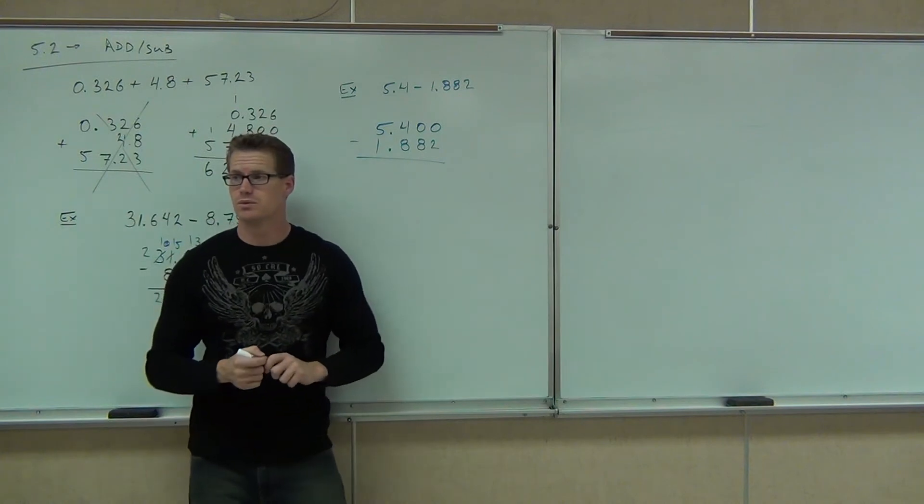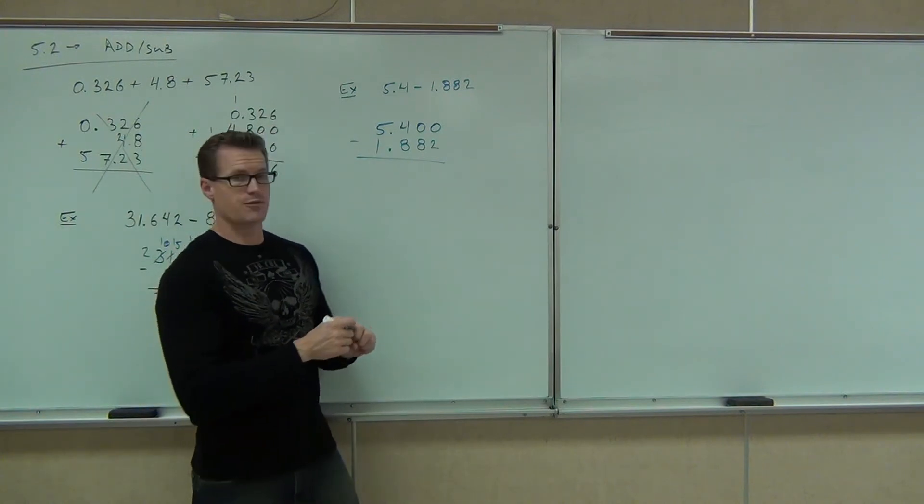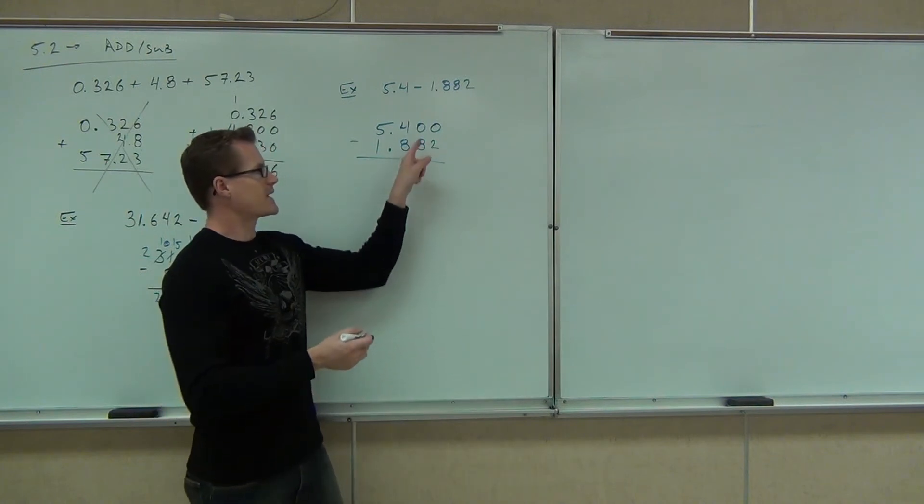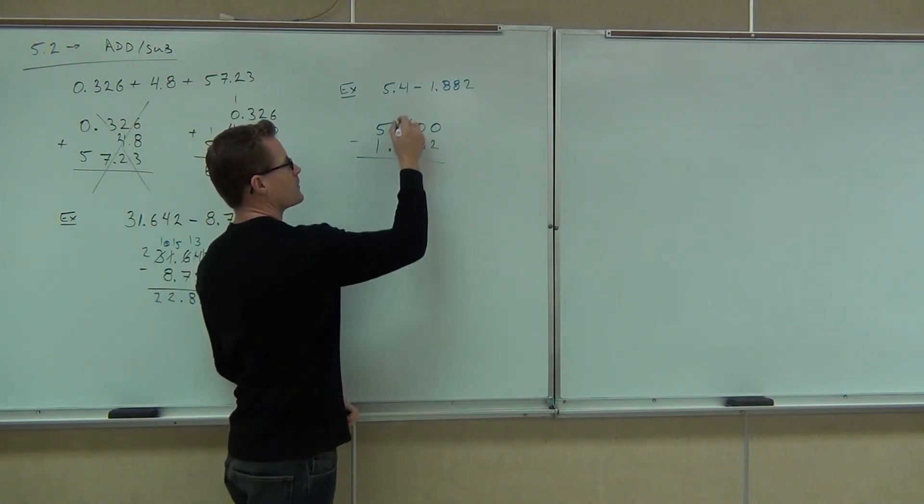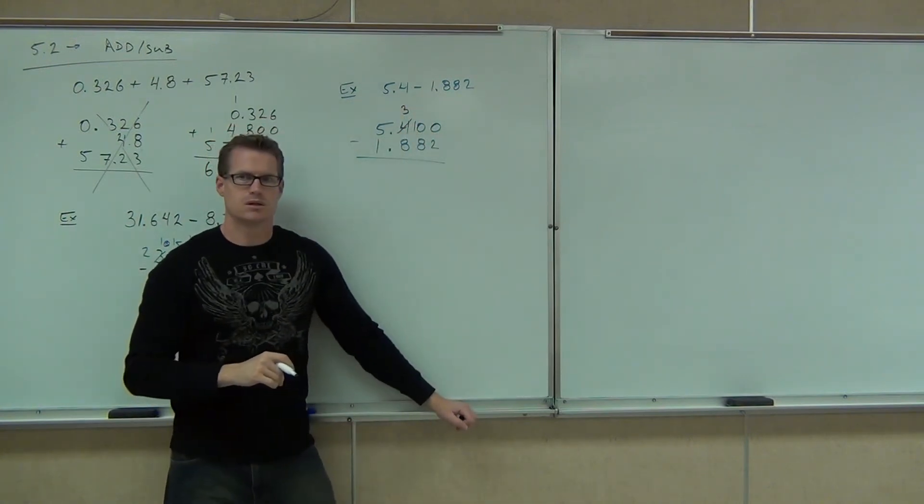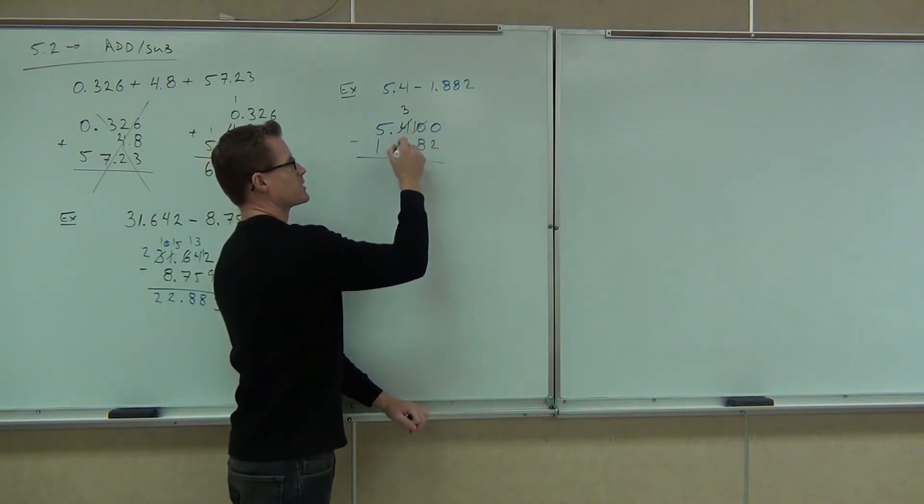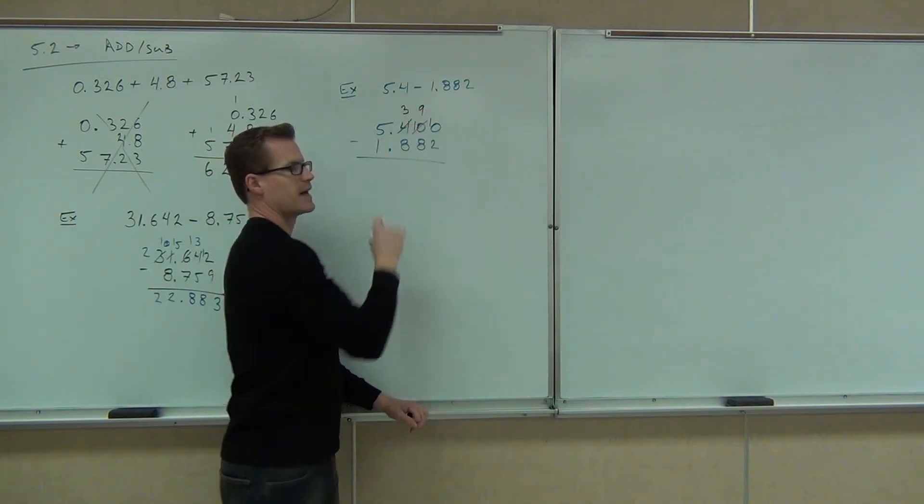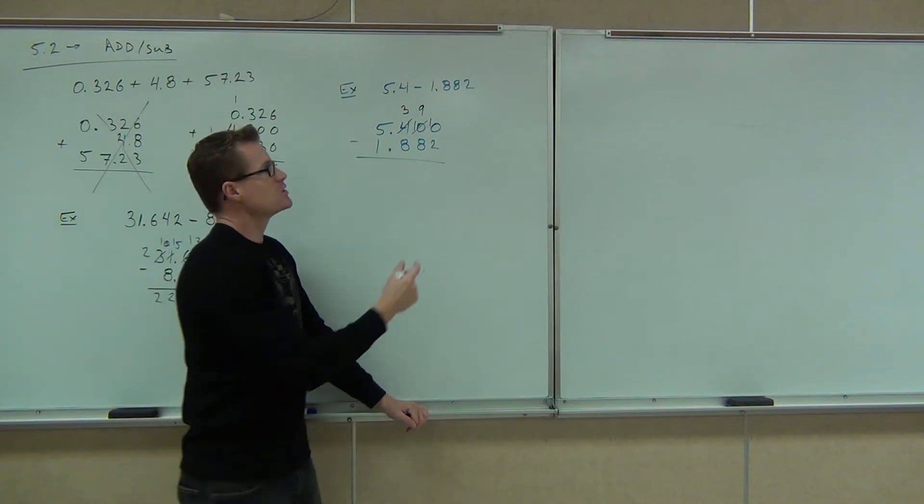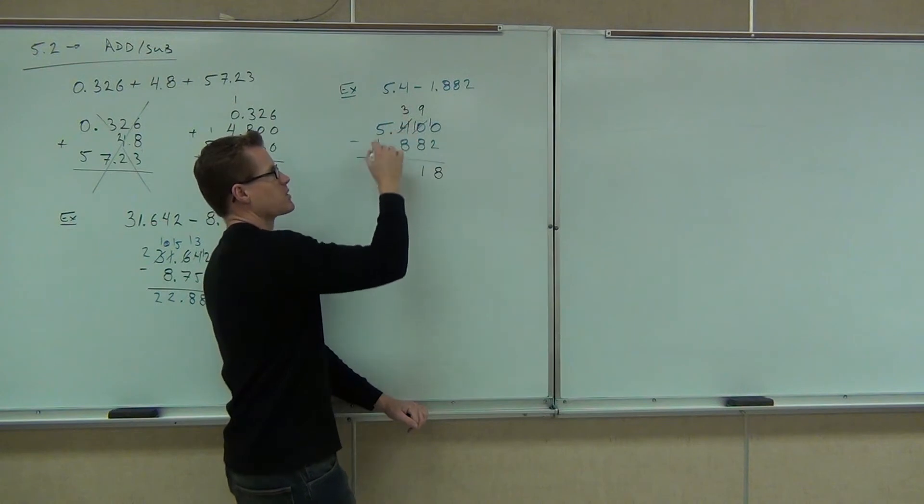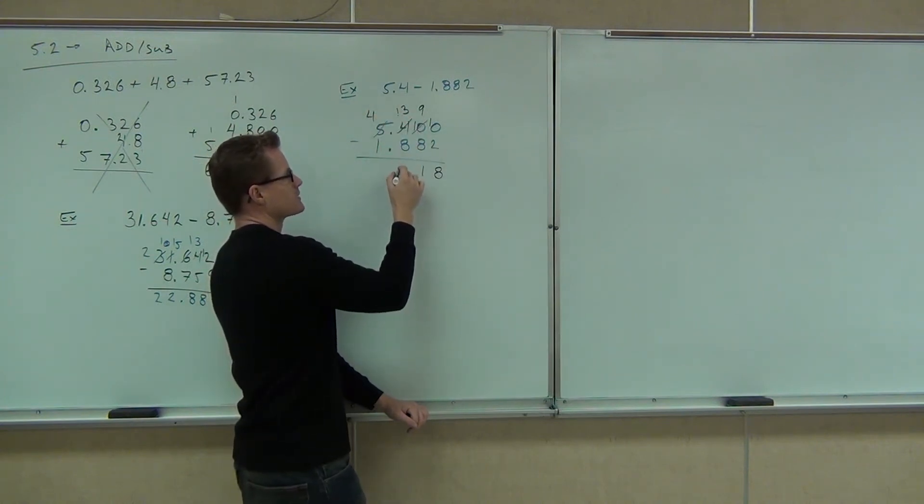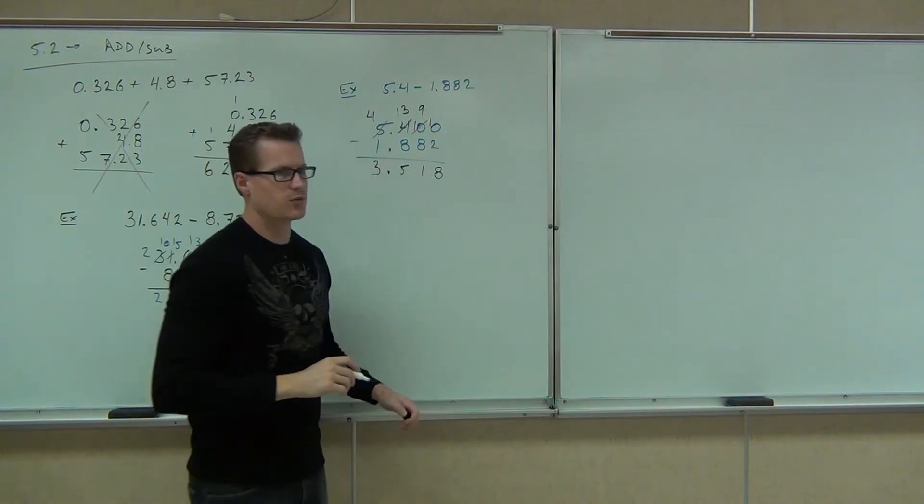What can you do? Borrow from the 4. From the 4, or from the 5, either one. I can't borrow from this, so I have to go one more place over. If I borrow from the 4, I make it a 3. That makes this a 10. But now I need one more from that, so how much is the 10 going to become? That's how I'd have to borrow. Now I can do the 10 minus 2. I can do the 9 minus 8, but I can't do the 3 minus 8. I've got to borrow from the 5. I get 5, and then our decimal, and then 3.518.